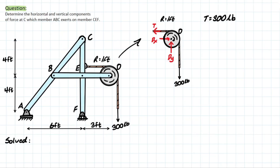Similar to a pin, the pulley also has reactions Dy and Dx. We can treat the pulley like a pin in terms of support reactions — it transfers its load from the rope into the member. To keep the system in equilibrium, Dx must equal 300 pounds, equal and opposite to the tension. Similarly, Dy also equals 300 pounds.